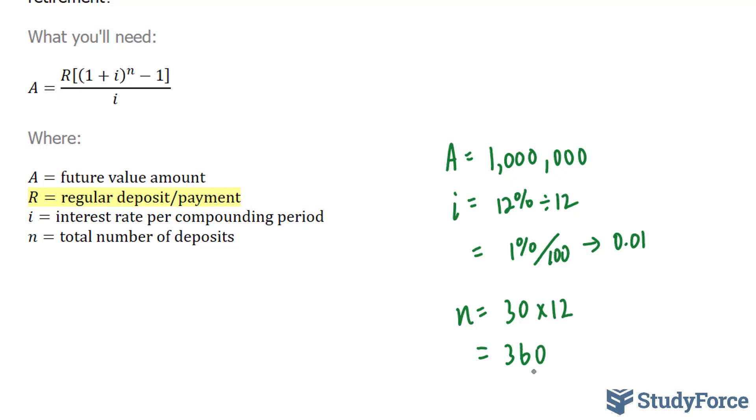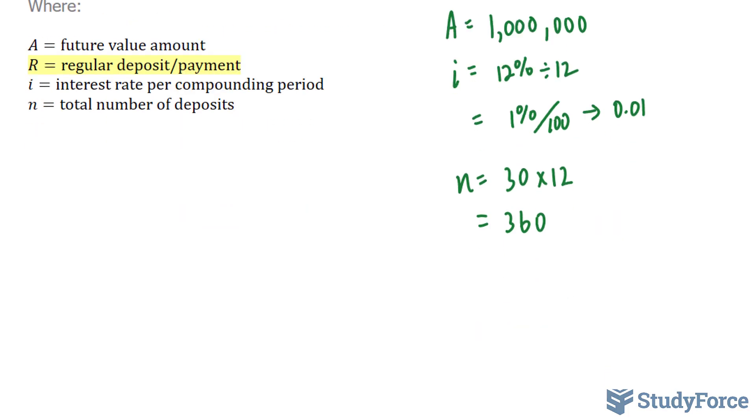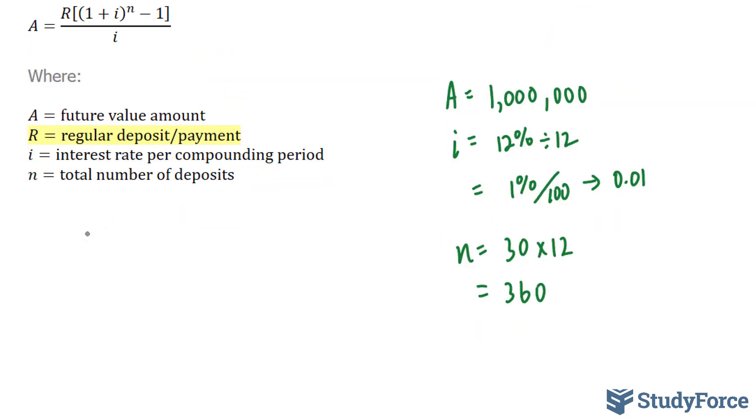Now all we have to do is substitute all of these values into this formula right here. So let's go ahead and do that. 1 million is equal to the R value that we're looking for times (1 + 0.01) to the power of 360 minus 1, over 0.01.